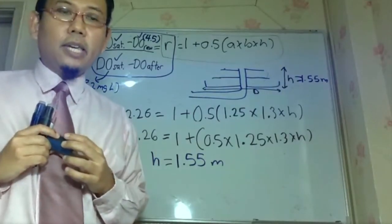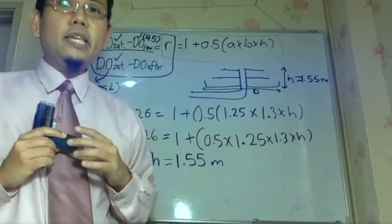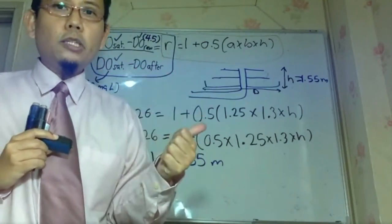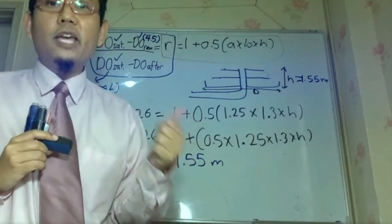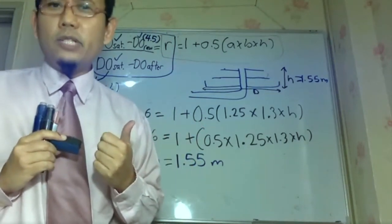Sir, sir? Yes. Nak tanya, how can you get 1.25 dan 1.3 tu? Oh, it's given in the notes, okay. It has been given in the notes. If you look further up, it says that when you have slightly polluted water, it is 1.25. If you have moderately polluted water... Page 33. Ah, yes.